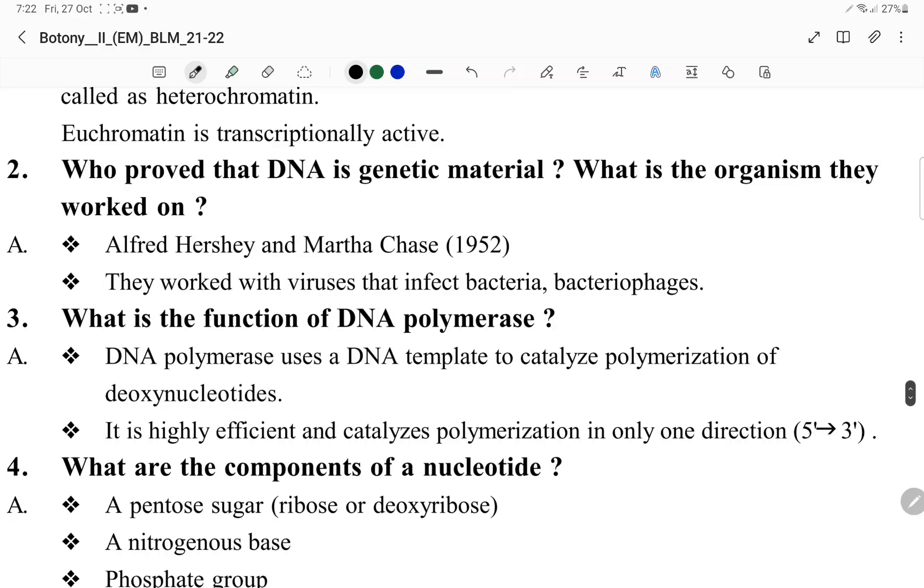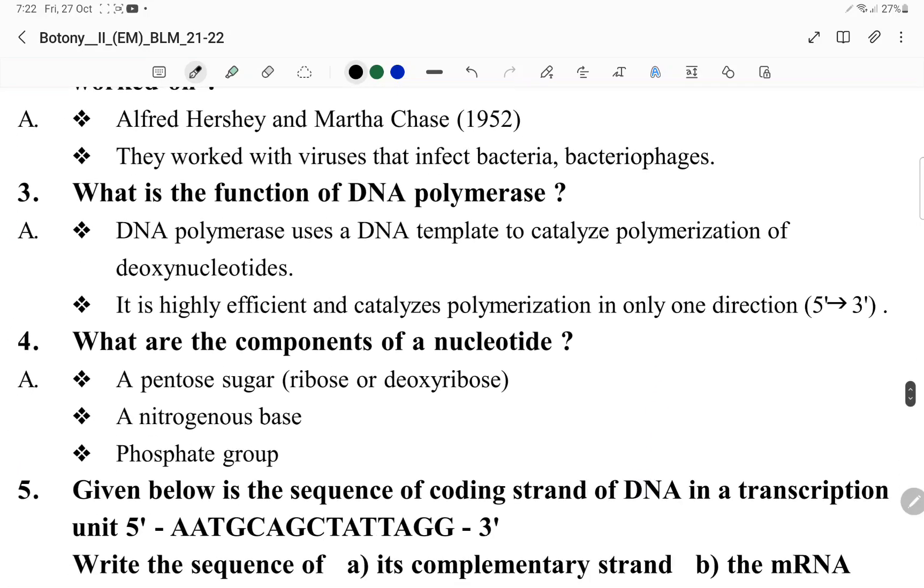Who proved that DNA is the genetic material? Alfred Hershey and Martha Chase, using bacteriophages as their organism. Functions of DNA polymerase: DNA polymerase uses a DNA template for polymerization. It's highly efficient and works in only one direction, 5 prime to 3 prime.